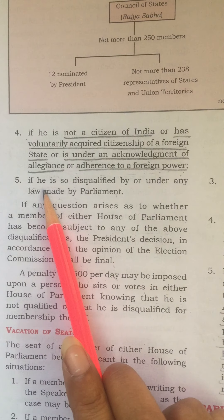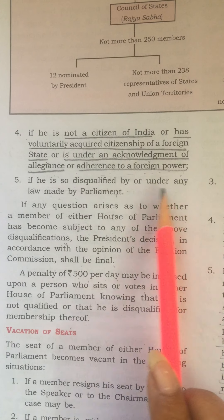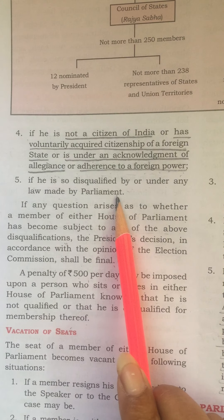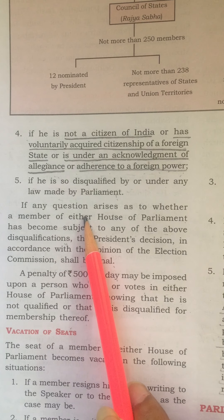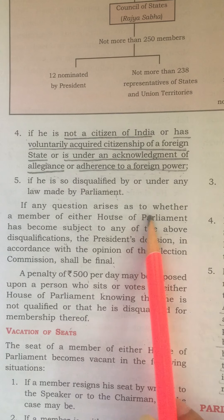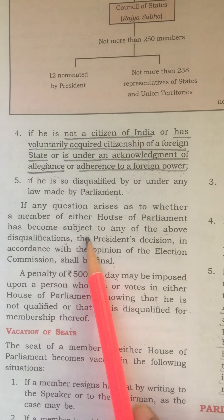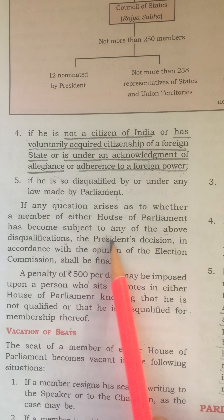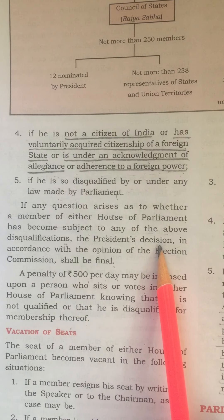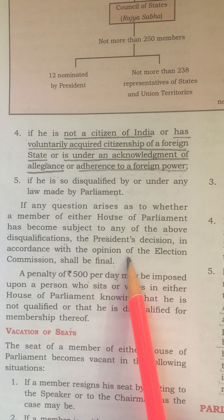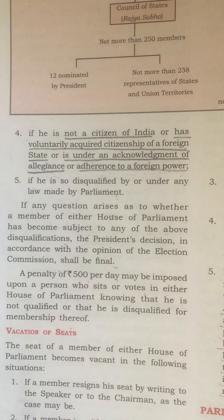The last point is if he is so disqualified by or under any law made by the parliament. Now, if any question arises as to whether a member of either house of parliament has become subject to any of the above disqualifications, the president's decision in accordance with the opinion of the election commission shall be final.